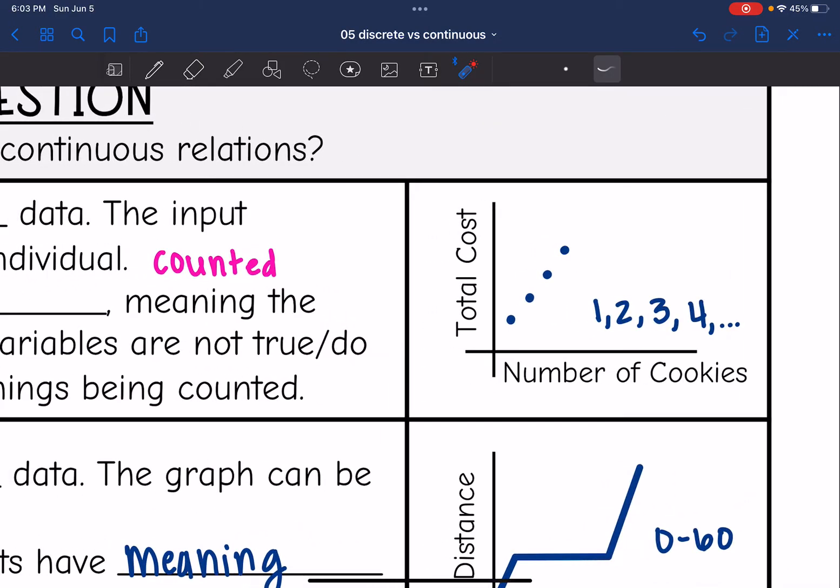So let's think about number of cookies, like if you're at a cookie shop, and then the total cost. They're not going to let you buy 0.5 cookies or 1.2 cookies or 3.5 cookies. They're going to say you can buy 1, 2, 3, or 4 cookies.